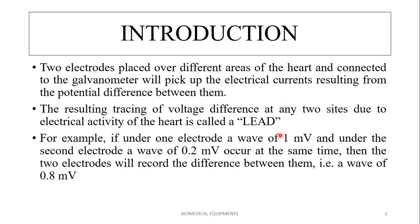What is a lead in the ECG? When two electrodes are placed over different areas of the heart and connected to a galvanometer, which picks up the electrical currents resulting from the potential difference between the two electrodes, the resulting tracing of the voltage difference between any two electrodes due to the electrical activity of the heart is called a lead.